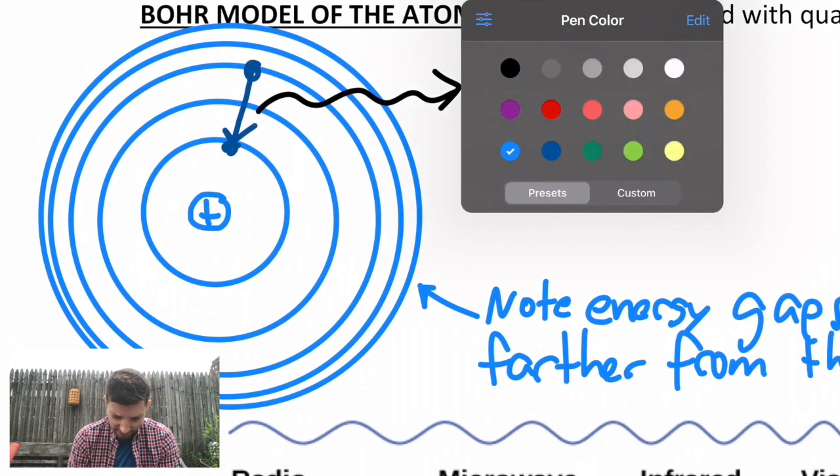Electrons are excited, they move to a higher level. Then they fall back and release energy as light.